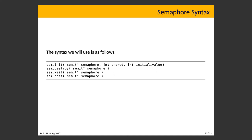The syntax for a semaphore is very straightforward. There are four functions: an initialization function, a destroy function, a wait function, and a post function. The wait and post functions just take a pointer to the semaphore you want to wait on or post on, respectively. The destroy function is the mirror image to init: sem_destroy takes a pointer to the semaphore you want to get rid of.